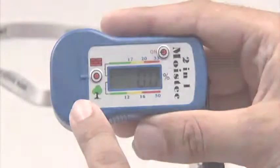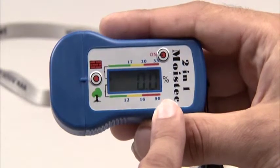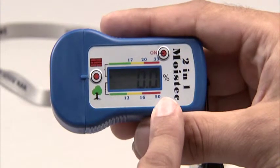This meter has a range from 5 up to 50% for wood moisture and 1.5 to 33% for building moisture.